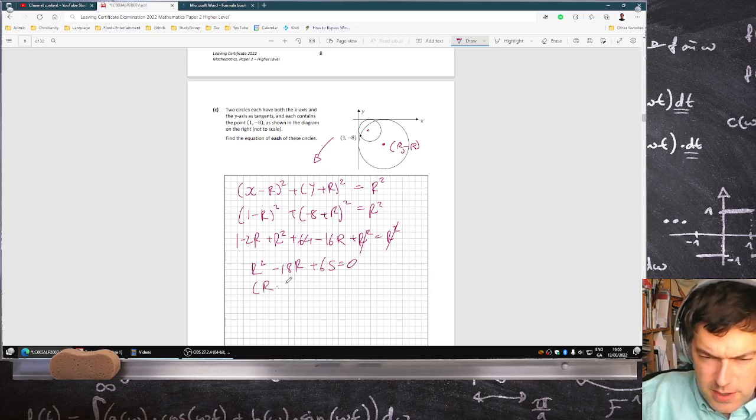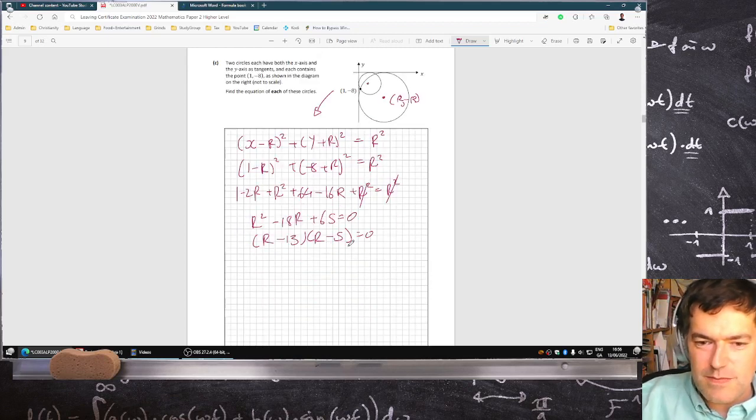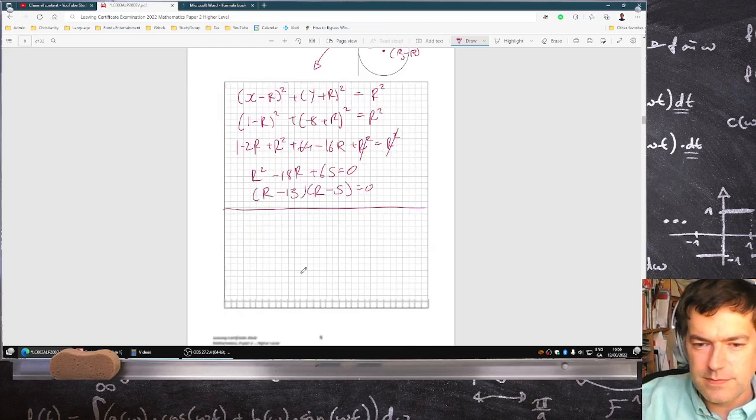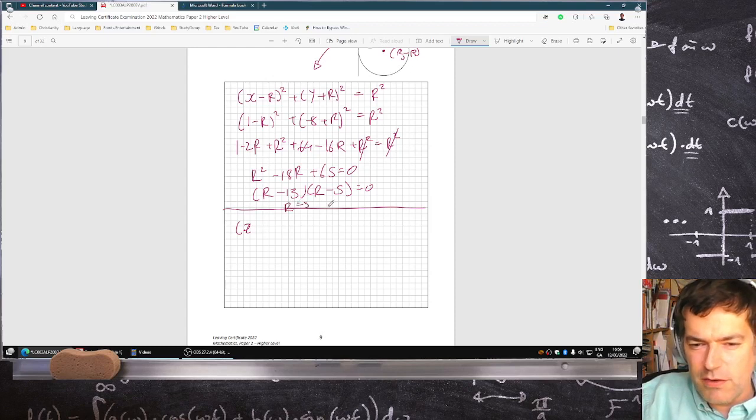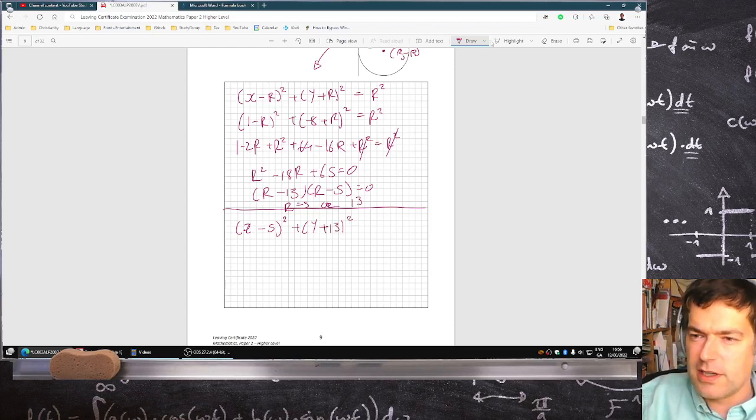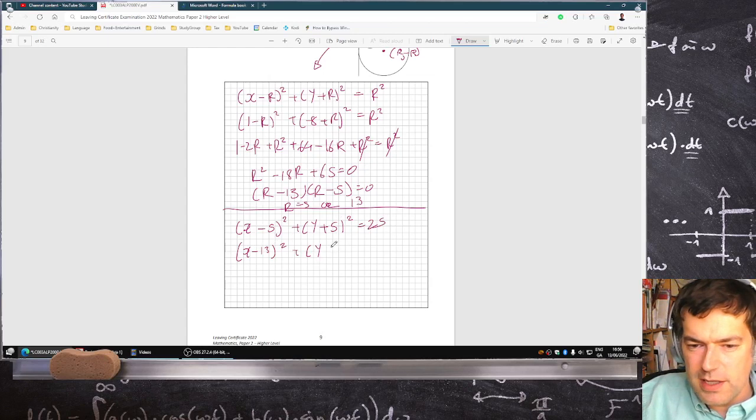So, r minus 13, r minus 5, as predicted, a small one and a big one. So the two circles are x, so r is 5. It'll be x minus 5 squared plus y plus 5 squared. Sorry, I'm mixing them up. x minus 5 squared plus y plus 5 squared equals 25, and then x minus 13 squared plus y plus 13 squared equals 169.